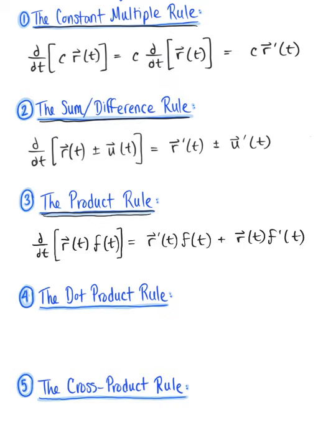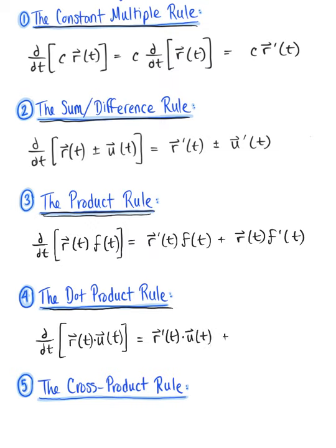Property number four is the dot product rule, which applies when we have the product of two vector-valued functions. Differentiating with respect to t the dot product of vector r of t with vector u of t is very similar to the product rule: we get the sum of two dot products — vector r prime of t dotted with the original vector u of t, plus the original vector r of t dotted with the derivative of vector u of t.